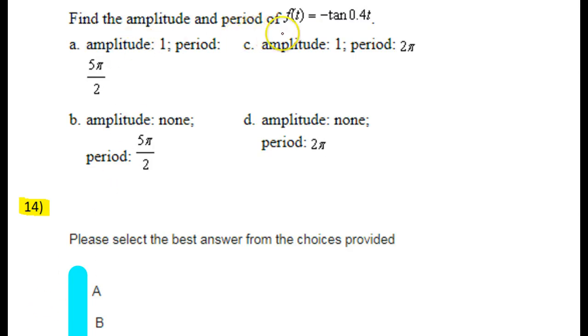Find the amplitude and period of this function, negative tangent 0.4t. Well, first of all, tangent has no amplitude.